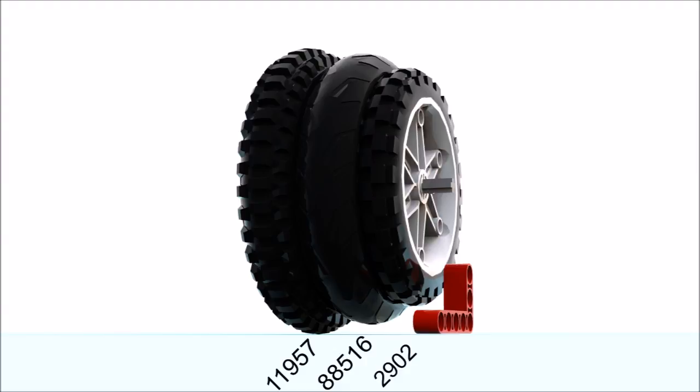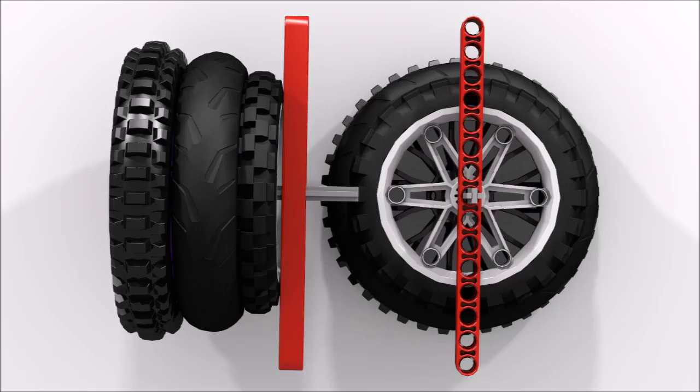On the left, we have 11957, which is the newer of the wheels. This is the slightly taller one that David showed me on the robot. And then in the middle, we have 88516, which is the original smooth motorcycle wheel that I used on Sirius. I'm also showing 2902, which is a more traditional, more commonly used motorcycle wheel for FLL robots, so you can get a frame of comparison if you've never seen the other two wheels.